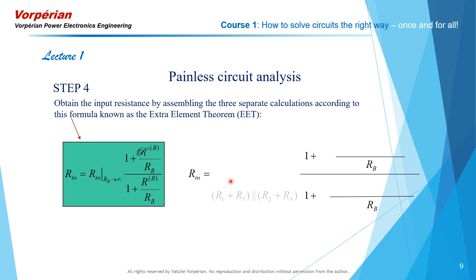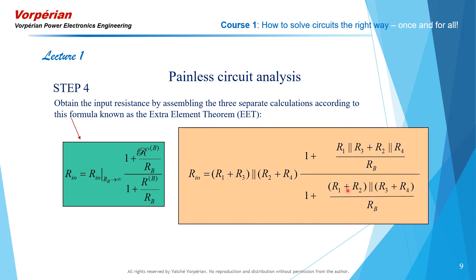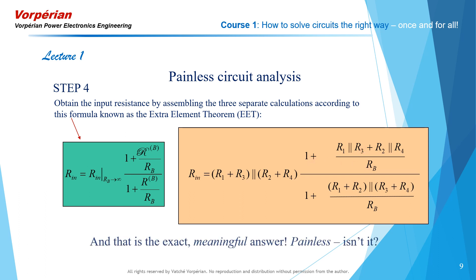And now we substitute these three separate calculations inside the formula. First comes the partial credit answer, then script R super B in the numerator, and Roman R super B in the denominator. This is the complete expression of the input resistance — a meaningful expression because all the circuit elements are grouped together in series-parallel combinations and as ratios compared to unity. This is an exact, meaningful answer. Painless, isn't it?